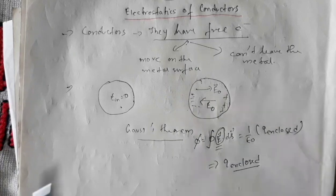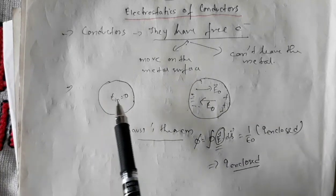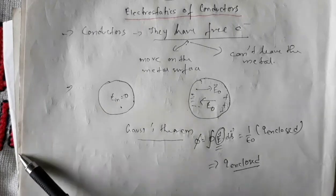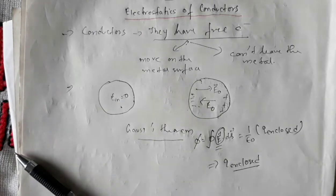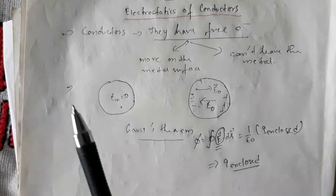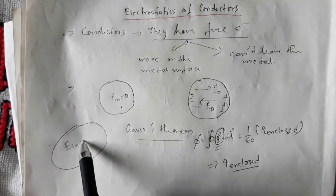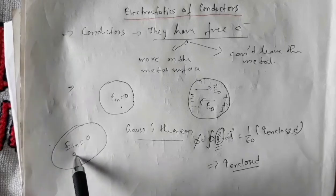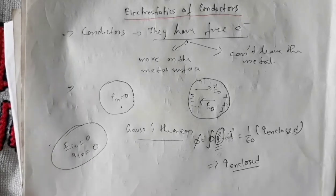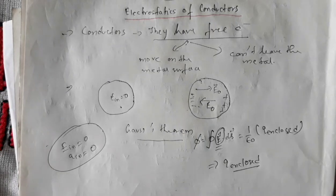Charge inside a conductor is always zero. That means free electrons are not inside the conductor — they are on the surface. You cannot have any charge inside a solid conductor. So inside a conductor, electric field is zero and charge is also zero. These are the first two properties.